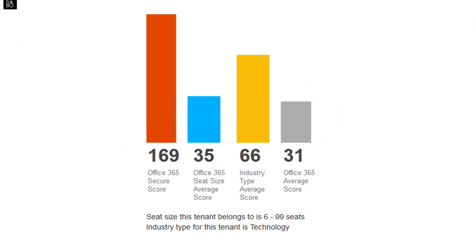When you look at Secure Score, on the right-hand side you'll see a comparison of your current score to tenants of similar size, plus the overall Office 365 average score. The overall average Office 365 score is only 31. My suggestion is to set a benchmark level for your tenants — say, a minimum of 150 or 200 — and use these steps to make sure they are secure. You can then demonstrate to customers that you're taking security seriously by showing how much above the average their environment is. Most tenants that come out of the box with standard settings have a very low Secure Score.